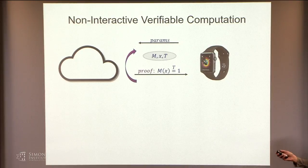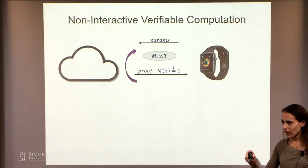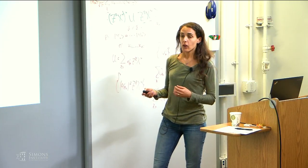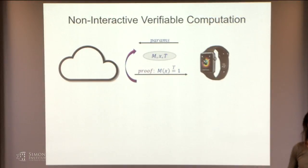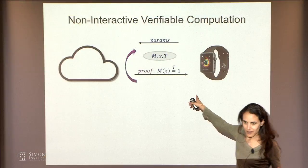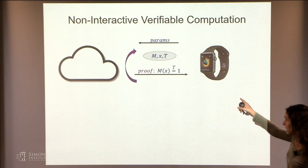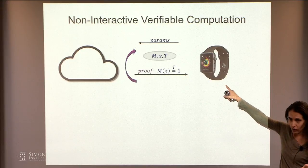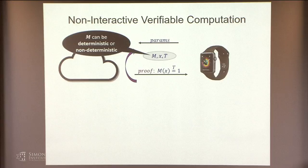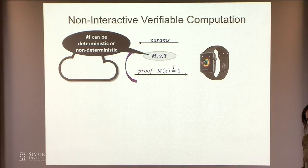Let me define it more formally. The communication complexity should be very short — the length of the proof should depend on T only poly-logarithmically. The runtime of the verifier should be very efficient; otherwise it'll do the computation on its own. He needs to read the input, and then we're allowing poly-log overhead. He cannot do the computation himself, of course. The prover should also be efficient: he needs to do the computation, but he's not like a Merlin — we want him to be as efficient as running the computation plus some polynomial overhead.